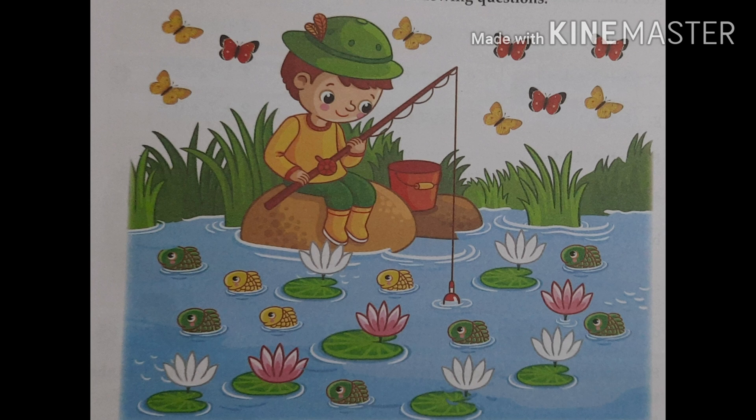Now I can see in this picture a boy is sitting. What is he doing? He is fishing. Some fishes I can see, lotus flowers I can see, butterflies are flying. Yes, you are also watching. So watch it very nicely and try to answer. I know you all can answer it very nicely.